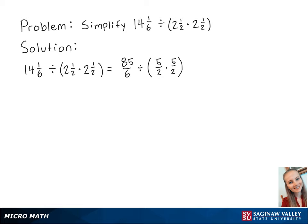Next, we need to multiply 5 halves times 5 halves, which is equal to 25 fourths. So now, all together, we have 85/6 divided by 25 fourths.